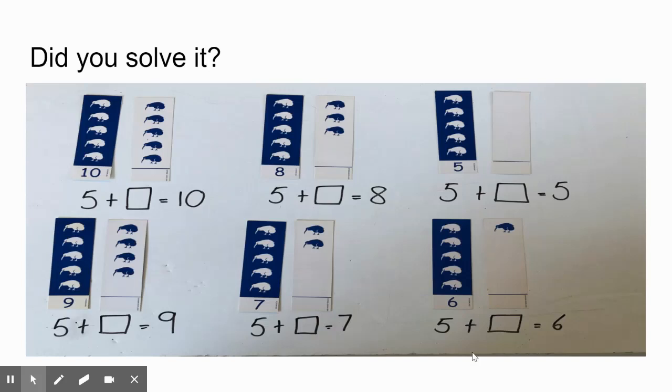What about the number 9? Did you guess 4? Can you see the 4 kiwis there? If I count them all I can go 1, 2, 3, 4, 5, 6, 7, 8, 9. So 5 and 4 gives me 9 kiwis.